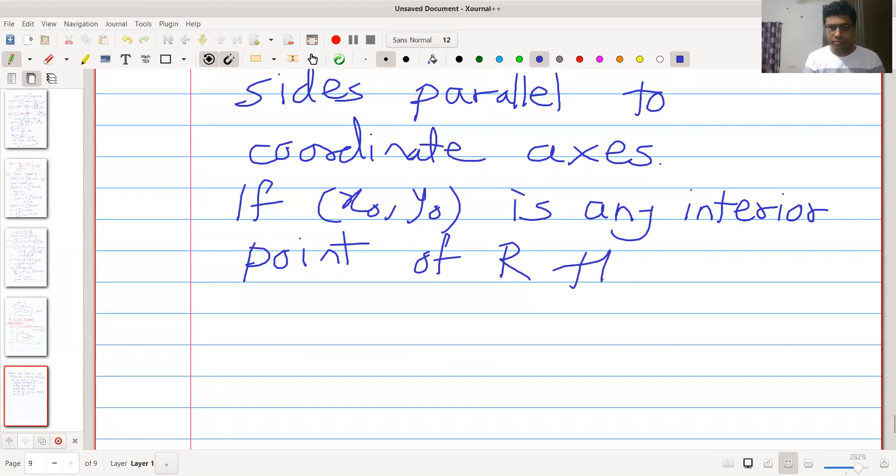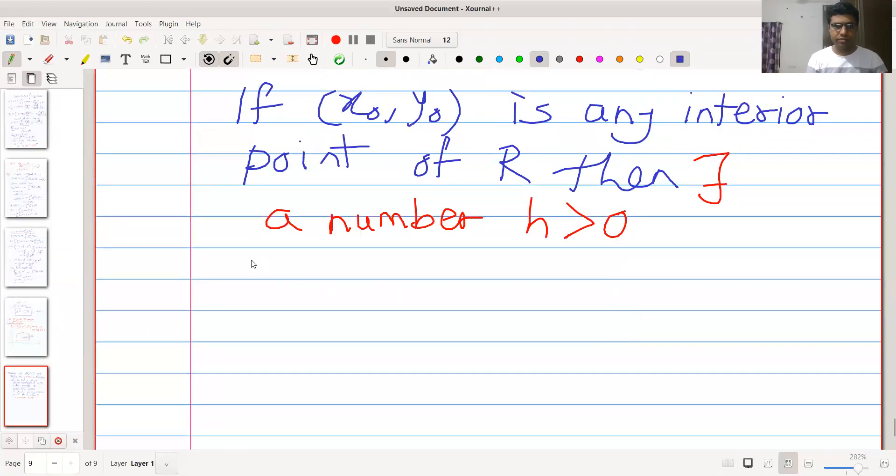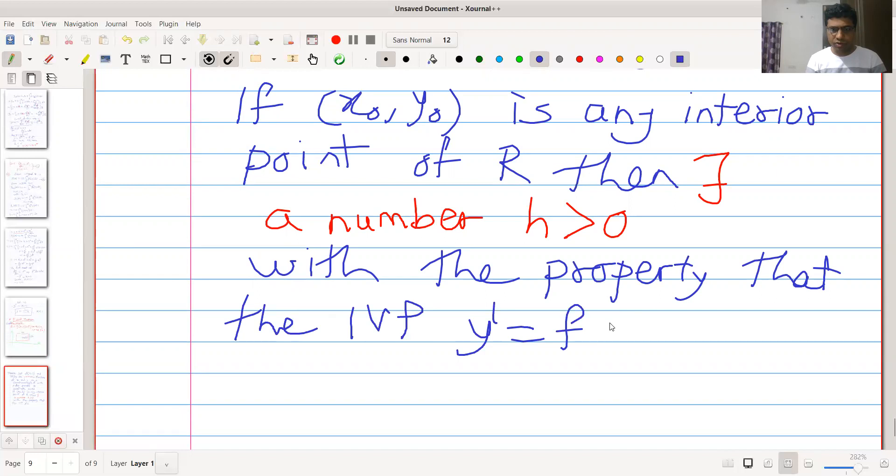Then there exists a number h positive with the property that the IVP (initial value problem) y' = f(x,y), y(x₀) = y₀, has one and only one solution.